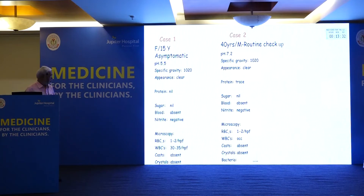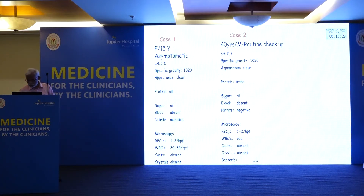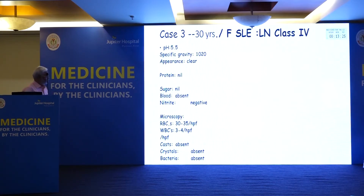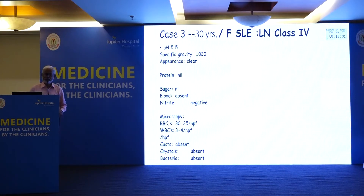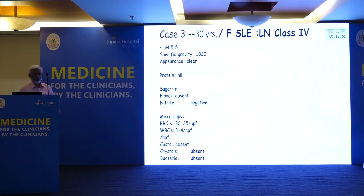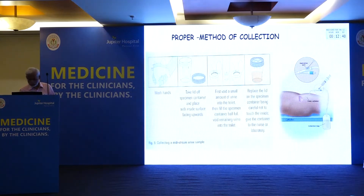Third case: a patient with lupus nephritis following up in a renal clinic was in remission, with protein negative all the time. On a visit, she had RBC 30 to 35 and WBC 3-5, and the resident doctor said 'Sir, this patient has got a renal flare.' I asked one question: when was the urine collected, and what was the last date of menstruation? The patient said it was the fourth day of menstruation. The moral of this story is that you must give proper instruction for collection.